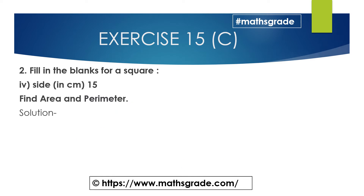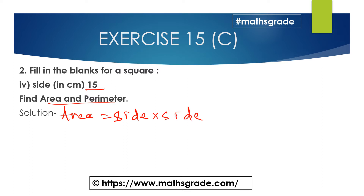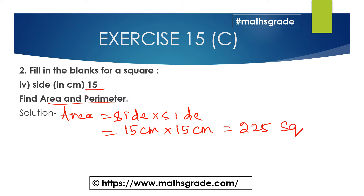Question number four. The side of the square is given as 15 centimeters. Find the area and perimeter of the square. Area of the square is side multiplied by side. So 15 × 15 = 225 square centimeters. This is the area of the square.